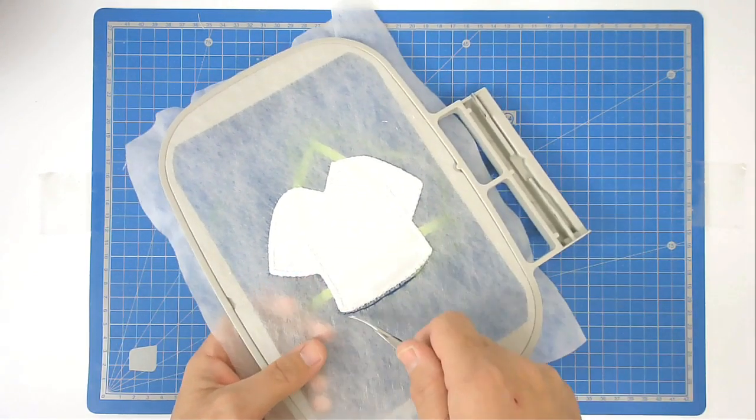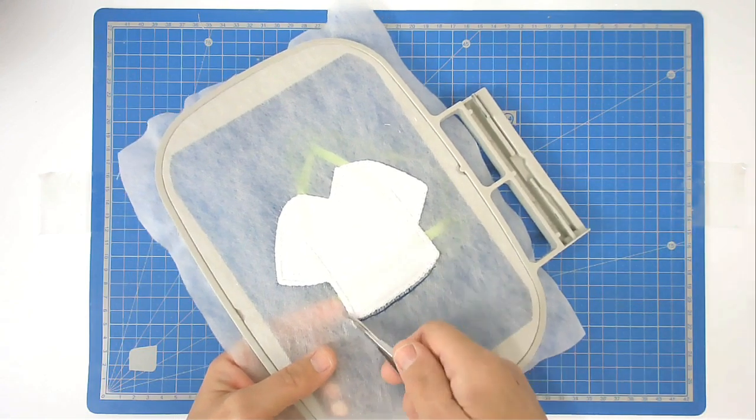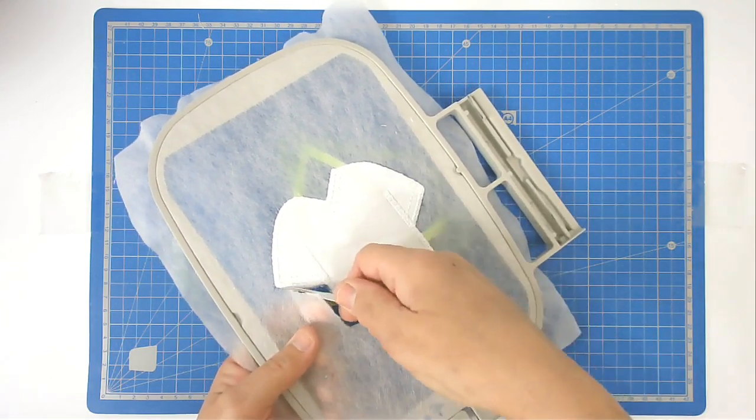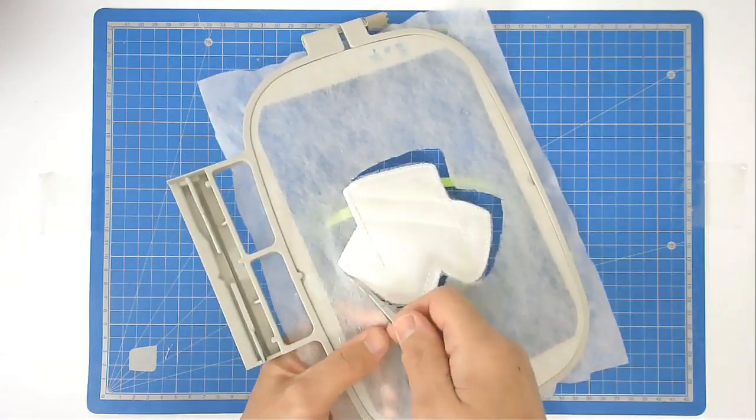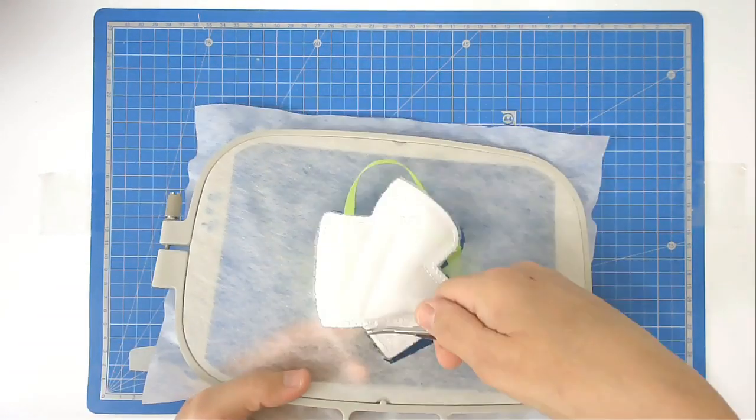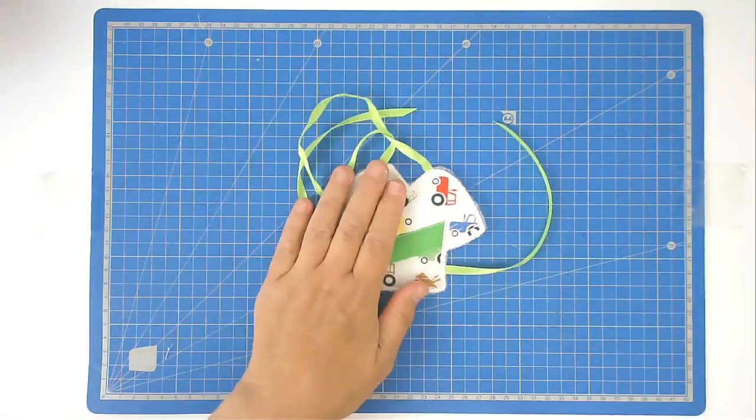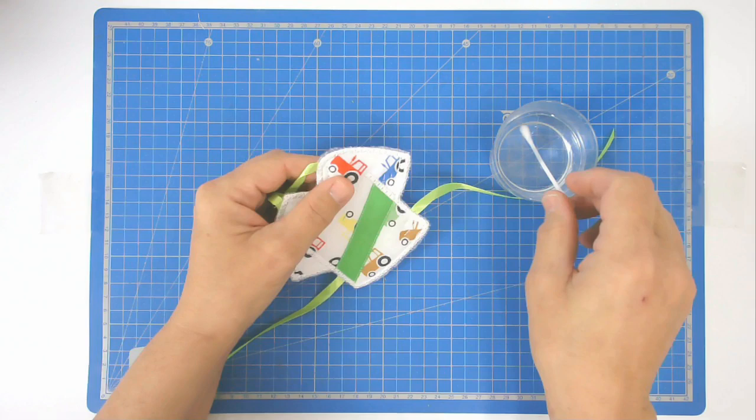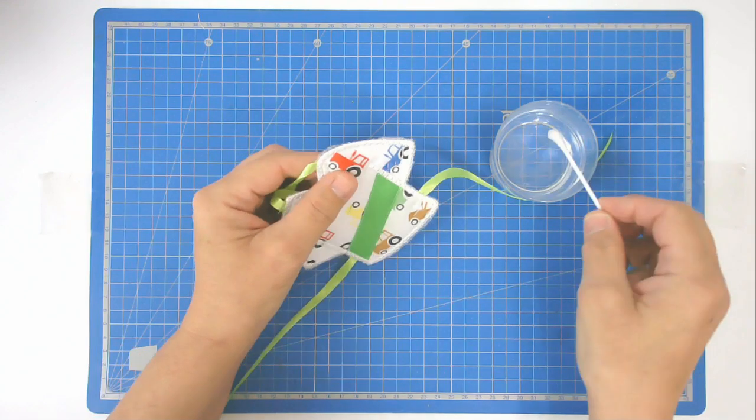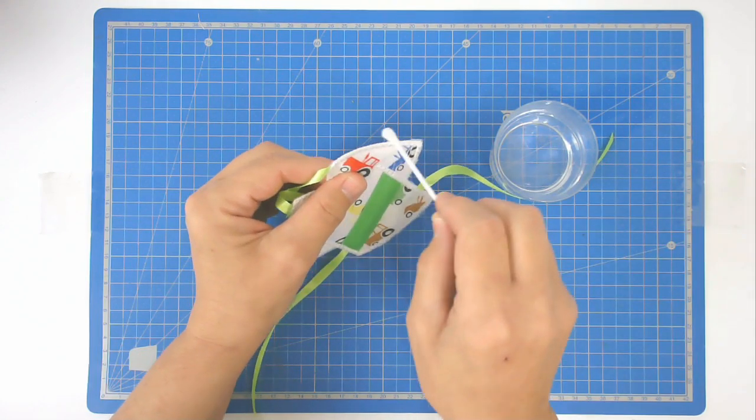We're now going to dissolve all the remaining excess stabilizer. So I've got warm water and a cotton bud. I'm just going to run it around the edge.